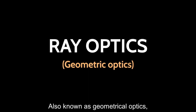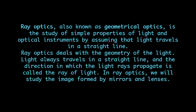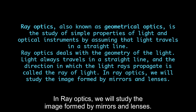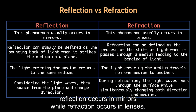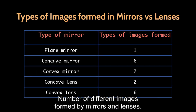Ray optics, also known as geometrical optics, is the study of simple properties of light and optical instruments by assuming that light travels in a straight line. In ray optics, we will study the image formed by mirrors and lenses. The main difference between reflection and refraction is that reflection occurs in mirrors while refraction occurs in lenses. Even though refraction occurs in mirrors too, we won't consider it for convenience.